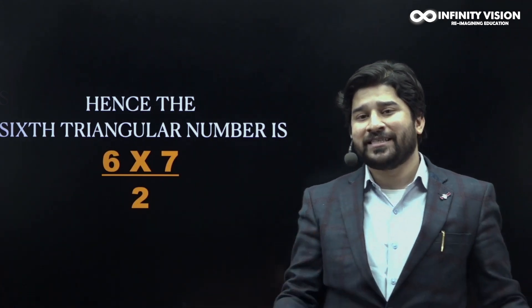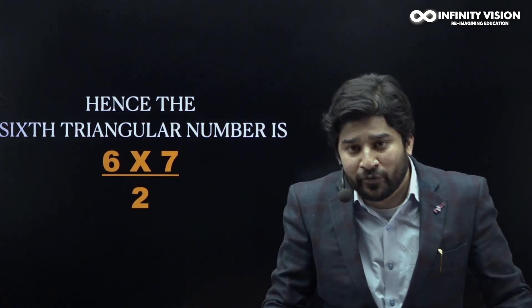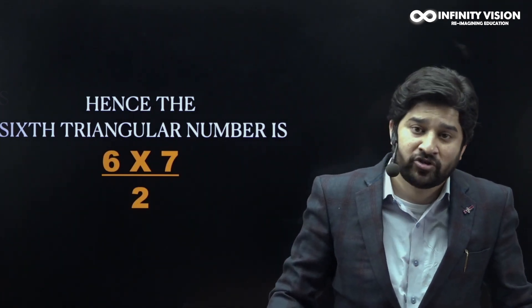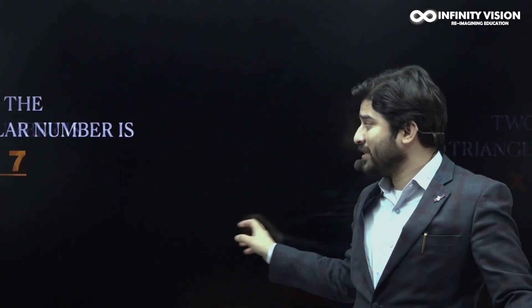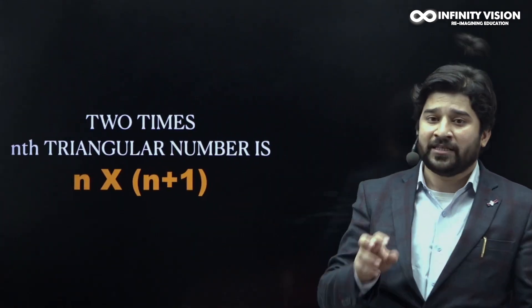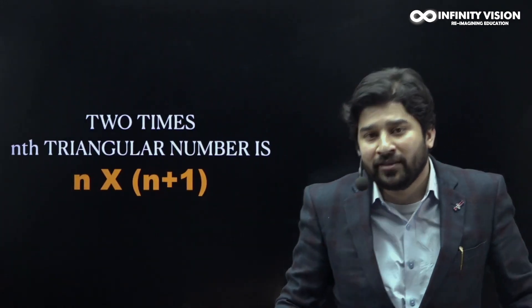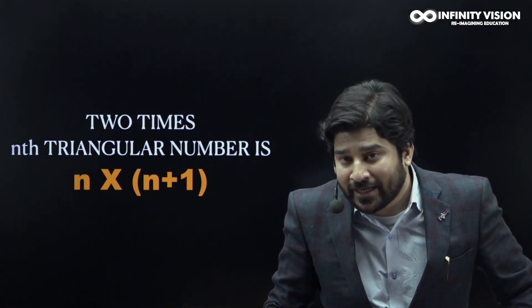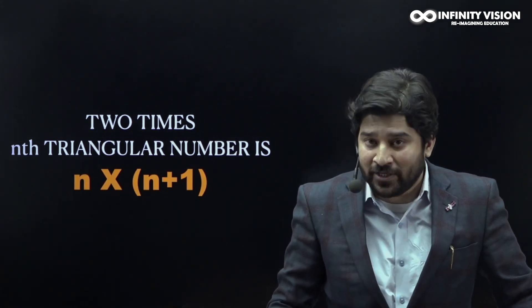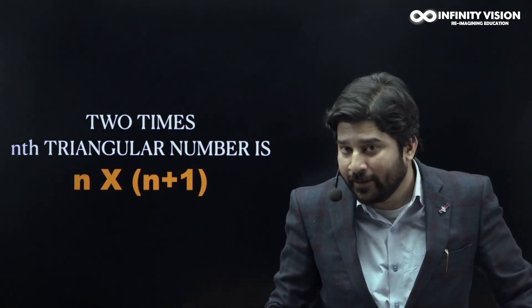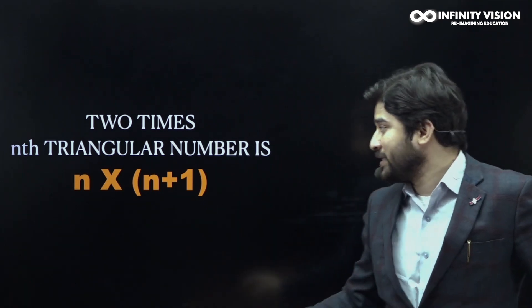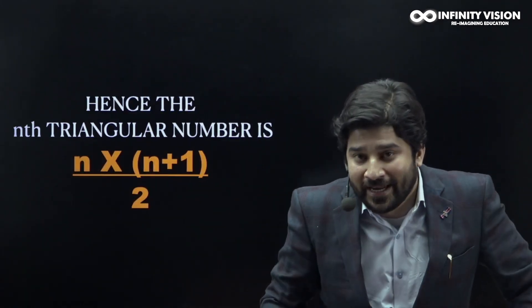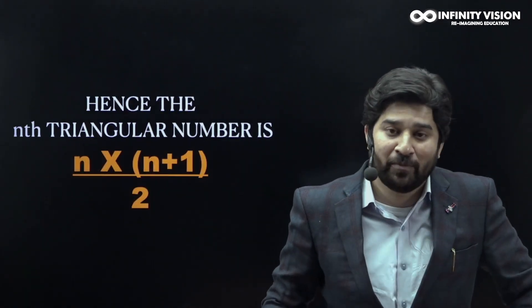You can project the same idea for the nth triangular number, that is 1 plus 2 plus 3 up to n. Two copies of the nth triangular number will again create a rectangle of dimension n by n plus 1. So the nth triangular number is going to be n into (n plus 1) divided by 2.